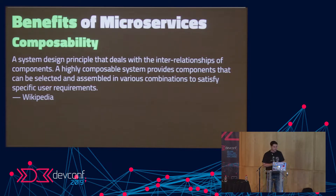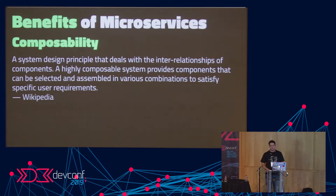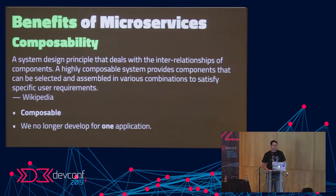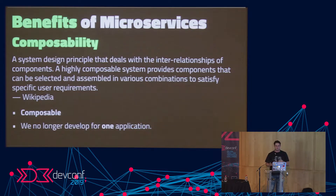One of the benefits of microservices is composability — defined as a system design principle whereby a very composable system provides components that can be selected and assembled in various combinations to satisfy different user requirements. Basically, microservices allow us to reuse them in specific ways. This is important because in web development today, we no longer develop for just one application — you also have to support your website, your mobile API, your PWA site, whatever the case is.